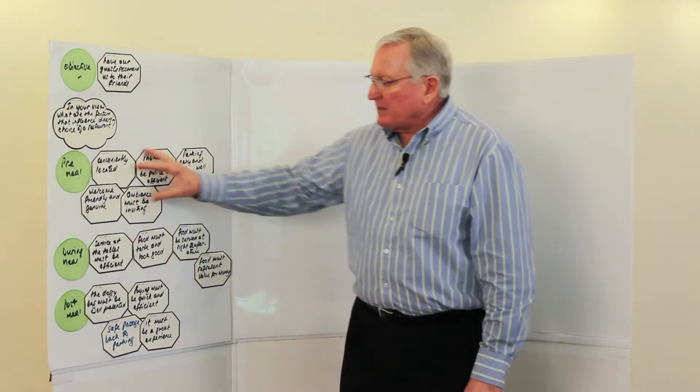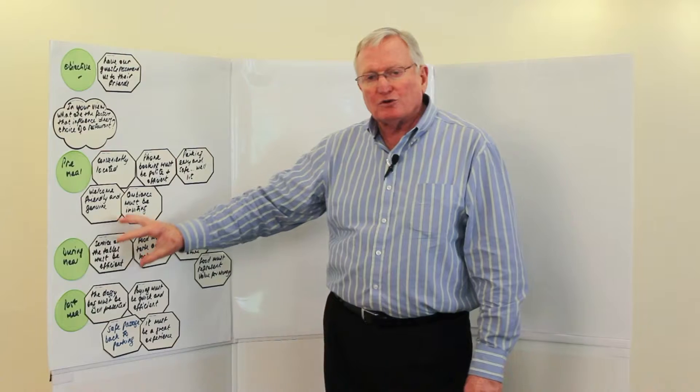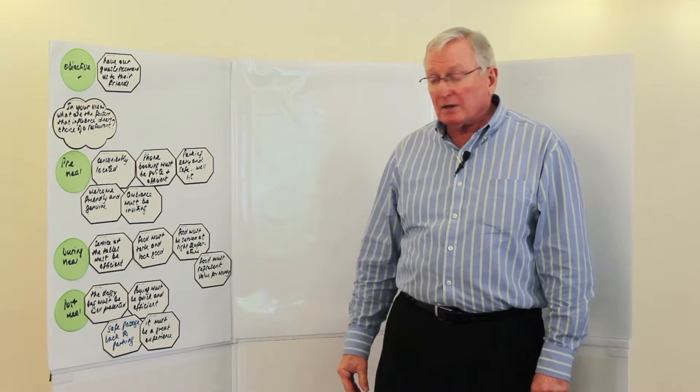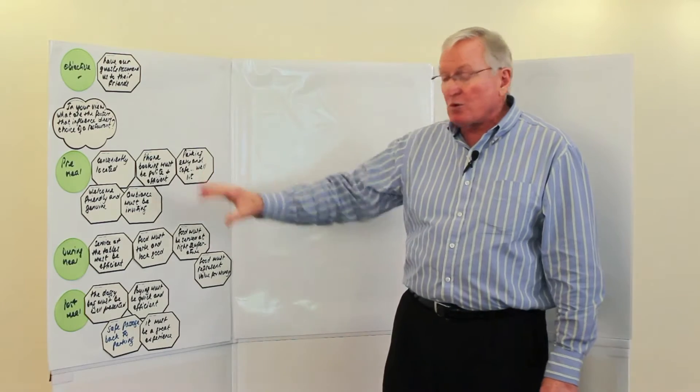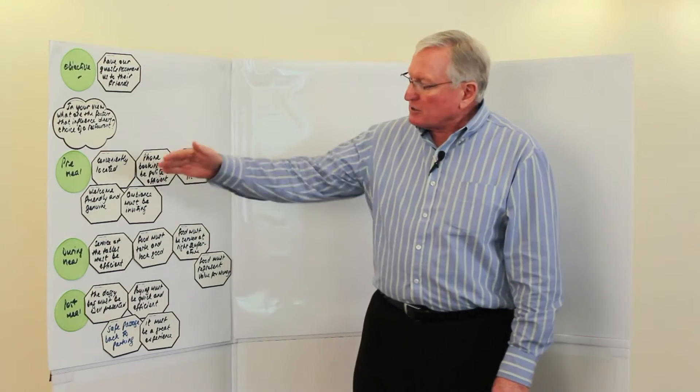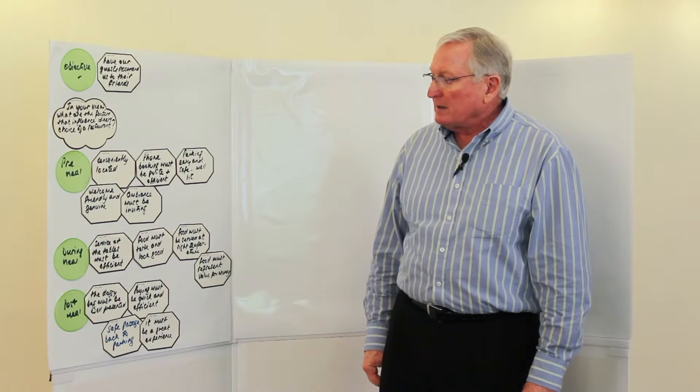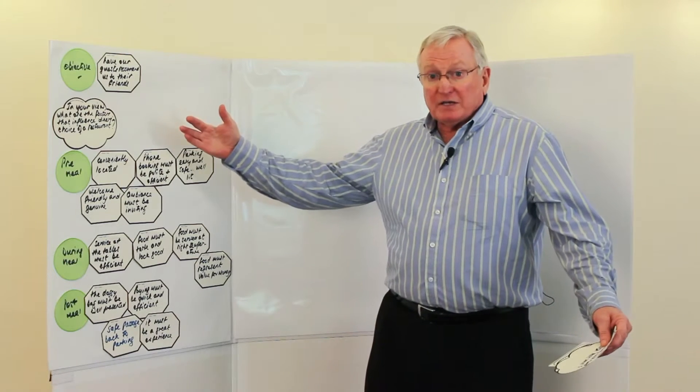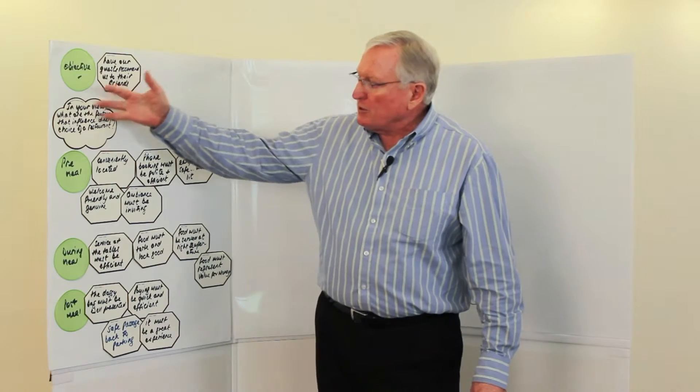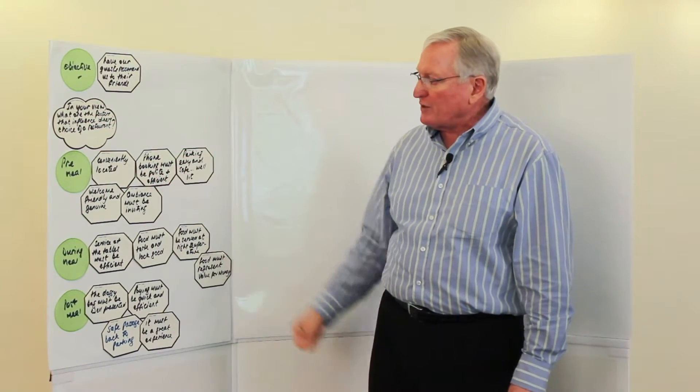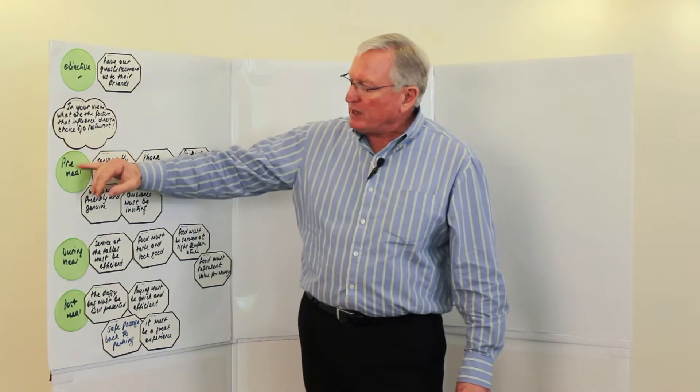So now, having done this, I might need to take this through to, say, an executive committee to say, this is what we think our restaurant, what's important about our restaurant. So I'll just quickly present this to give you a feel for how that would go. So members of our executive committee, what we did is we looked at what the factors are that influence a successful restaurant. And we decided there were three areas: pre-meal, during the meal, and post-meal.